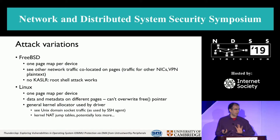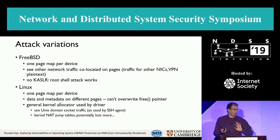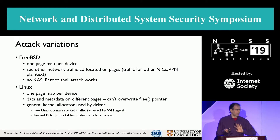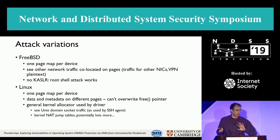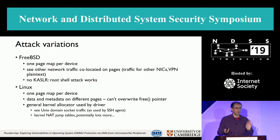FreeBSD and Linux have a page map per device, so they don't share with USB, but you can still see data that's on the same pages. You can run the same root shell attack on FreeBSD because there's no KASLR. On Linux, the kernel allocator is used by the driver, so we can see kernel jump tables, Unix domain socket traffic, and lots more.